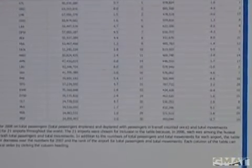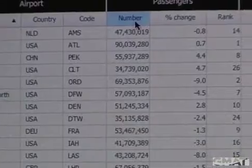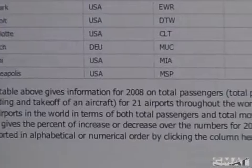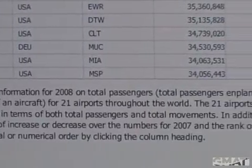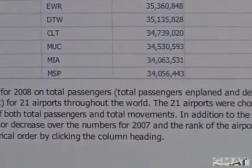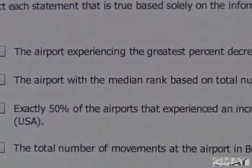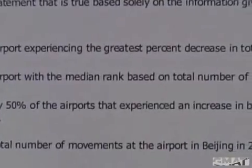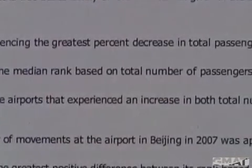For example, here is a question we are currently piloting that uses integrated reasoning. It includes a table that can be sorted like a spreadsheet. The table includes data on the number of passengers and airplane movements at 21 airports. This question includes a list of statements and asks you to determine which ones are true using the data in the spreadsheet.